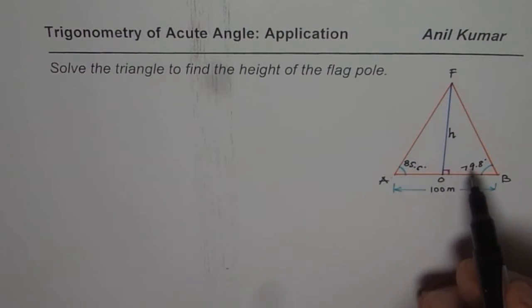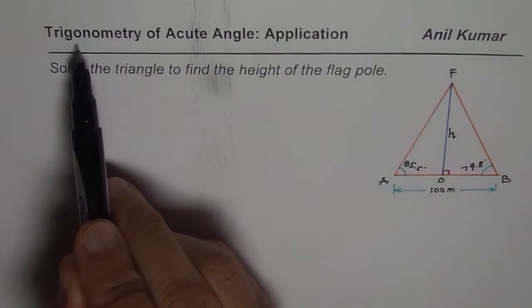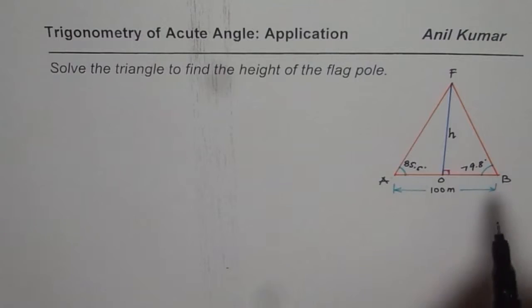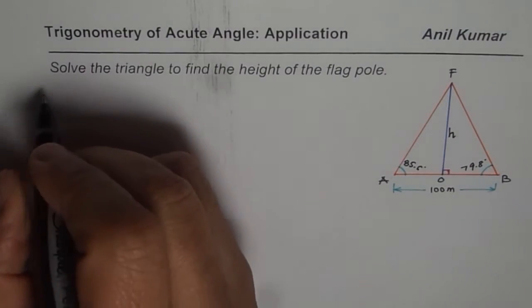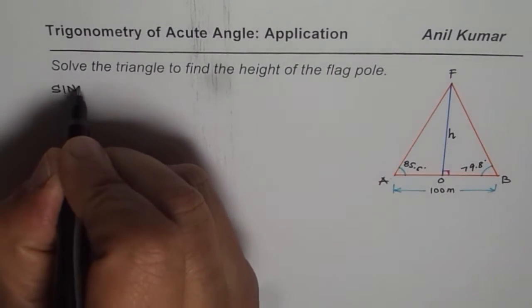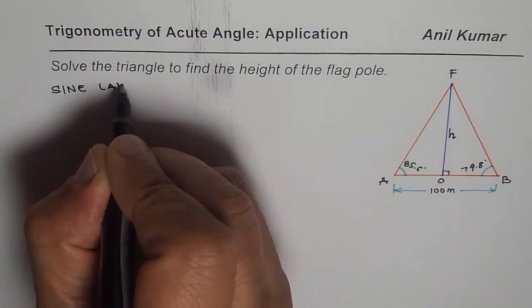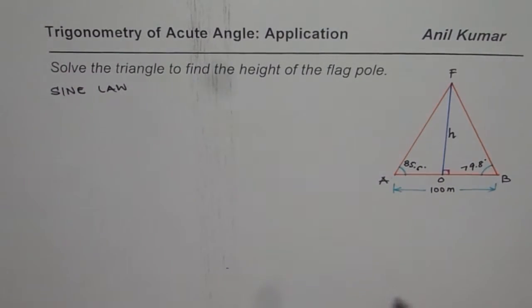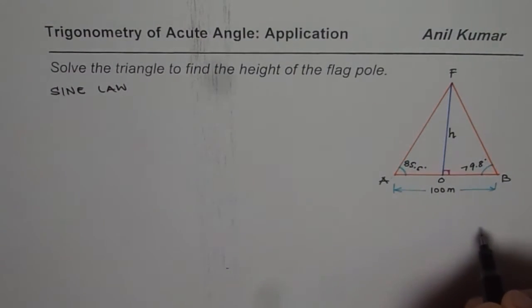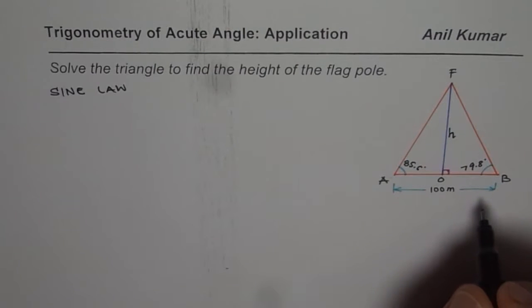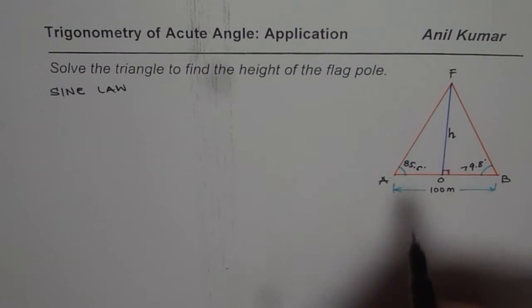You could always find tan ratios and do it which is a lengthy method. Since we are doing a chapter on trigonometry of acute angle, I'm assuming that you know sine law, right? So we will use sine law to solve this particular question. I'll also provide you with a link so that you can also use trigonometric primary trigonometric ratios to solve it. It will be lengthier but very important.